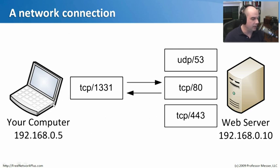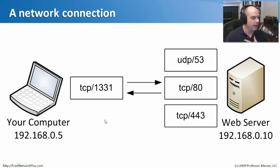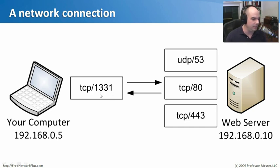Here's a graphical description of a computer talking to a web server. This web server has some ports in use by services: UDP port 53 for DNS, TCP port 80, and TCP port 443. When I bring up a browser and connect to that web server, I type in the name or IP address and hit enter. My client decides to use TCP port 1331 as the ephemeral port to communicate to the server on TCP port 80.